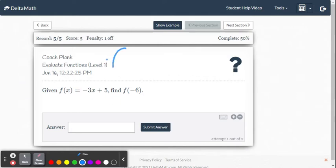So I'm going to write out the way you would write this out. You write it out as f of negative six equals negative three, and for x, replace it with negative six using substitution, plus five.